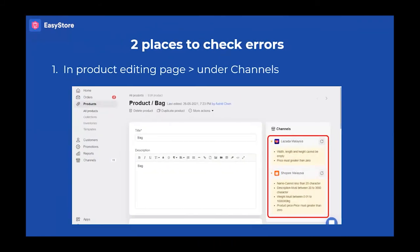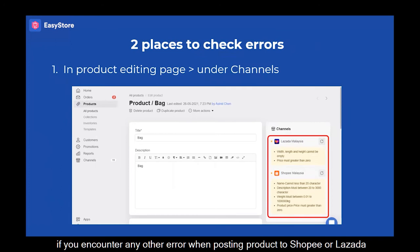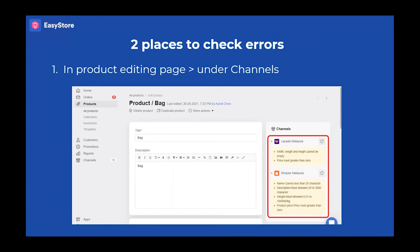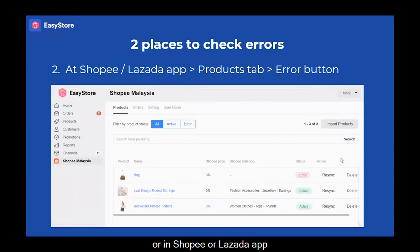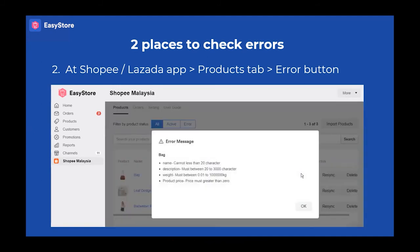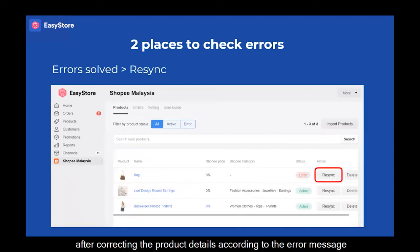Other than that, if you encounter any other error when posting a product to Shopee or Lazada, you may find out the cause of the error by two methods. First, in the product editing page under Channels, or in the Shopee or Lazada App under the Products tab, click on the Error button. After correcting the product details according to the error message, you may click Resync here or repost the product one more time.